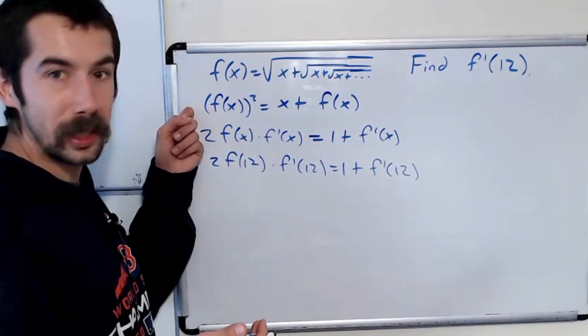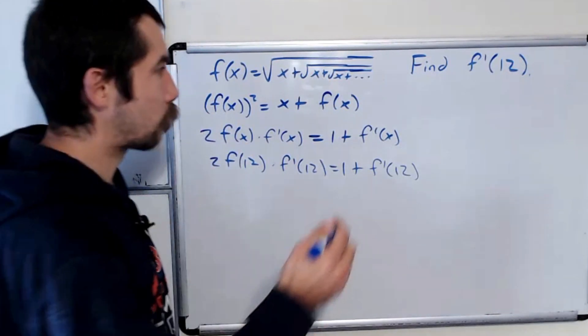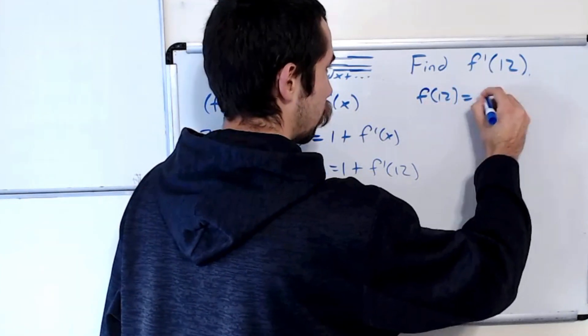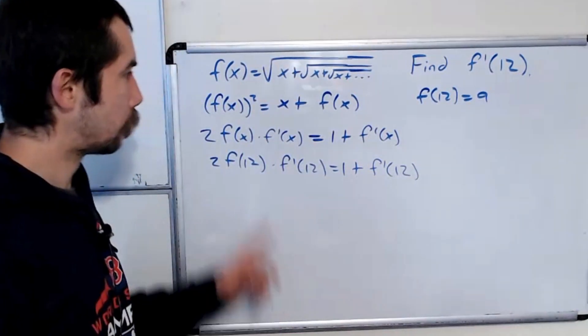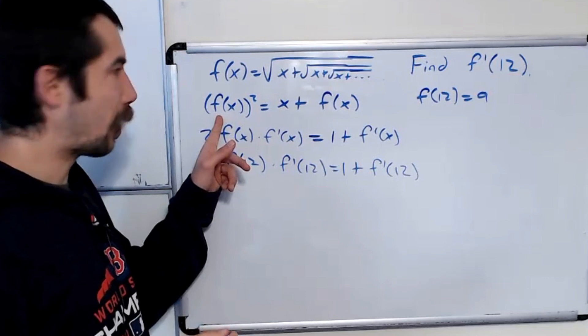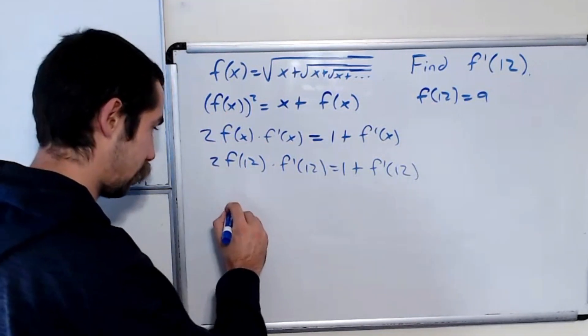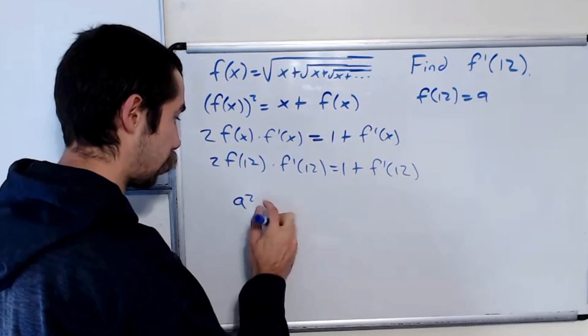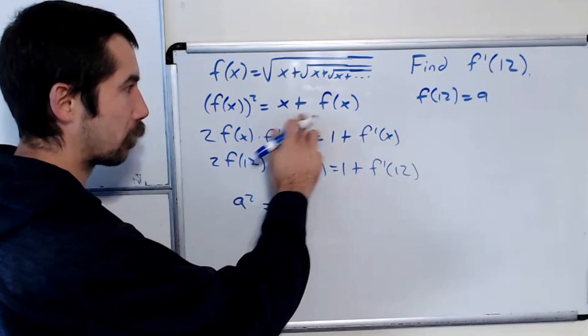Let's use this equation here again. So subbing in x equals 12, we have, well, let's call the value of f of 12, I don't know, just some letter, let's call it a. So subbing in x equals 12, we'll have a squared plus, sorry, a squared is equal to 12 plus a.